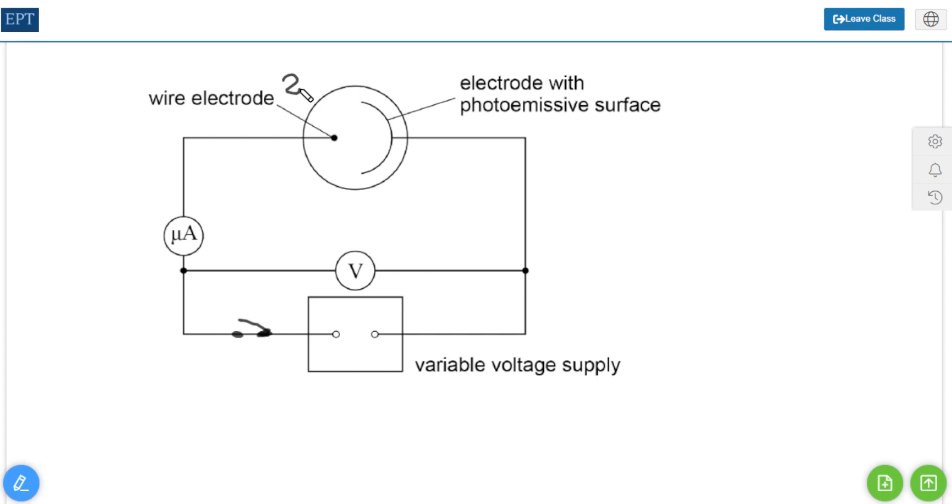Now if we illuminate the surface of the photoemissive electrode with some EM radiation such that it has an energy quite a lot greater than the work function, we know that some electrons will come shooting off of this surface.